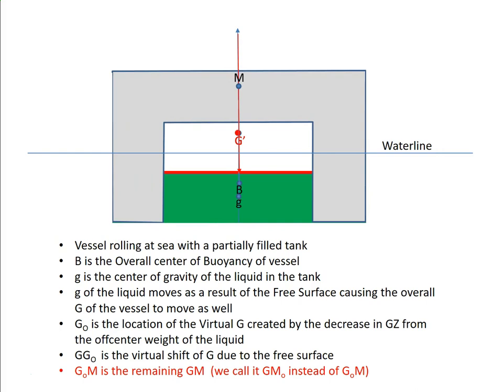So that is our remaining GM. We can calculate that using the free surface formula: GGO equals R times L times B cubed divided by displacement times 420.